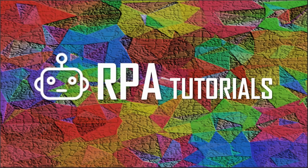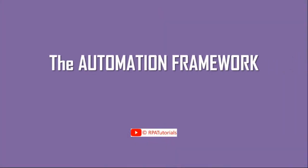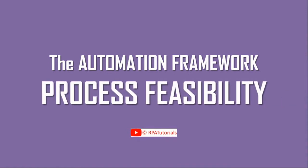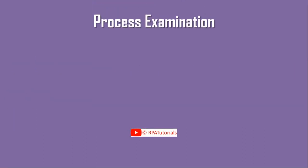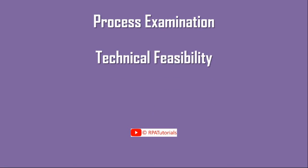Welcome to RPA tutorials. In this video we bring you the second stage of the RPA automation framework, which is process feasibility. In this phase we will see how you can examine selected processes and determine to what extent they can be automated. The process feasibility stage consists of two steps: process examination and technical feasibility.